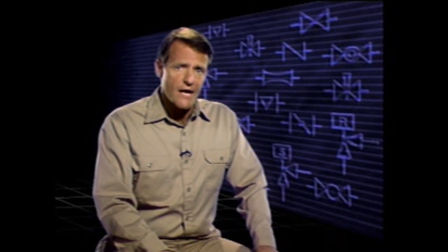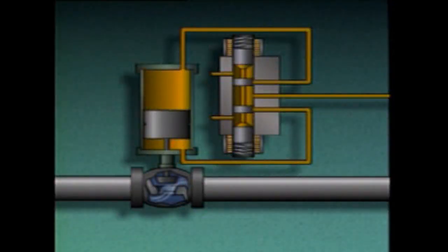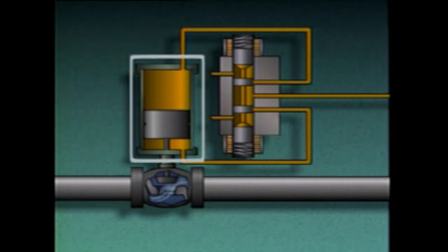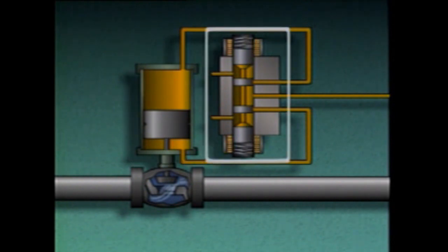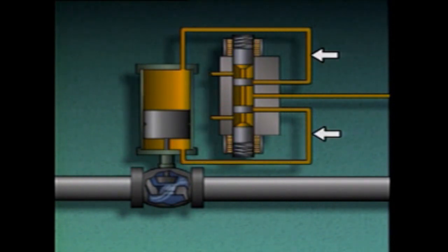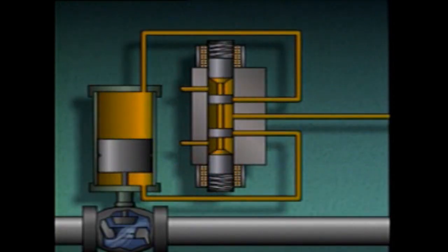In order for a double-acting hydraulic actuator to accurately position a valve, the amount of fluid entering and bled from the cylinder has to be accurately controlled. The device selected to do this job is usually a pilot valve, or as it's sometimes referred to, a spool valve. The valve is called a pilot valve because it guides or controls the flow of hydraulic fluid to and from the actuator.